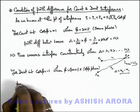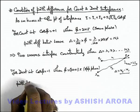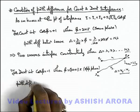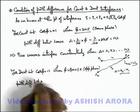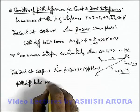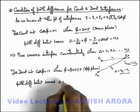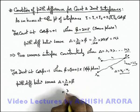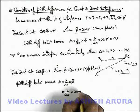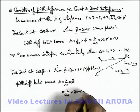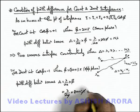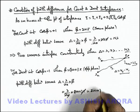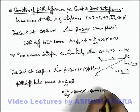In this situation, if we calculate the path difference between the waves, it is λ over 2π multiplied by φ, which gives λ over 2π multiplied by (2n+1)π. Cancelling π, this gives us (2n+1) times λ/2.